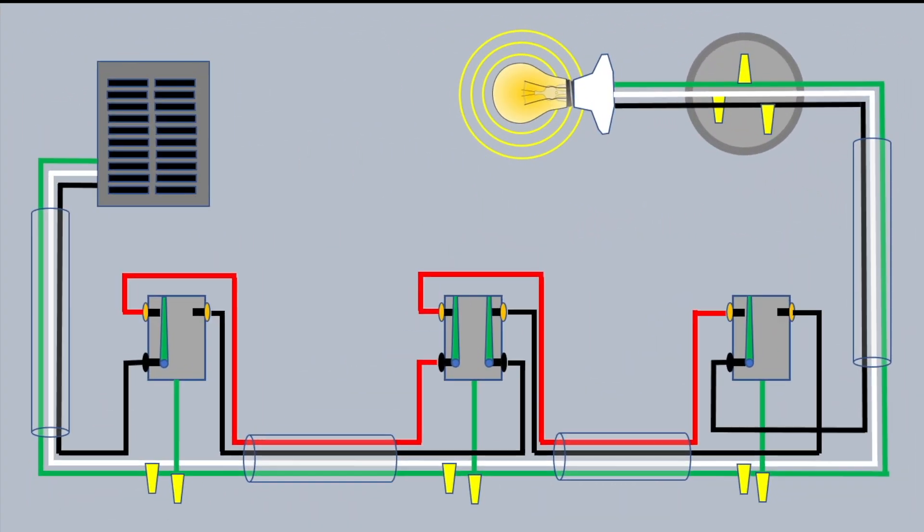If you're having trouble following all this, I'd just say freeze the frame and look at it. Now another way to wire a four-way switch loop is to run power to the first switch, and you can see that I'm doing that here.